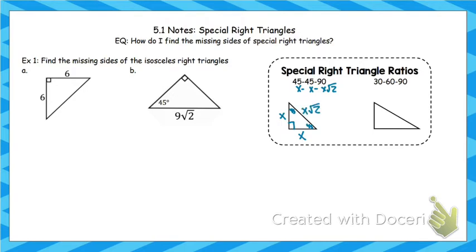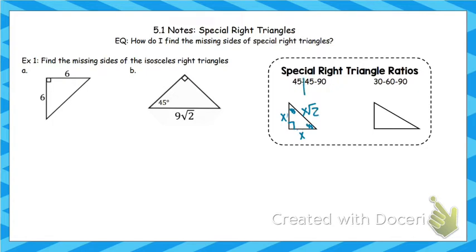That ratio would be the same no matter what x is. For example, if x were 10, then it would be 10, 10, 10√2. The way I'm typically going to write it, you're going to see me make a little chart that looks like this: x, x, x√2.